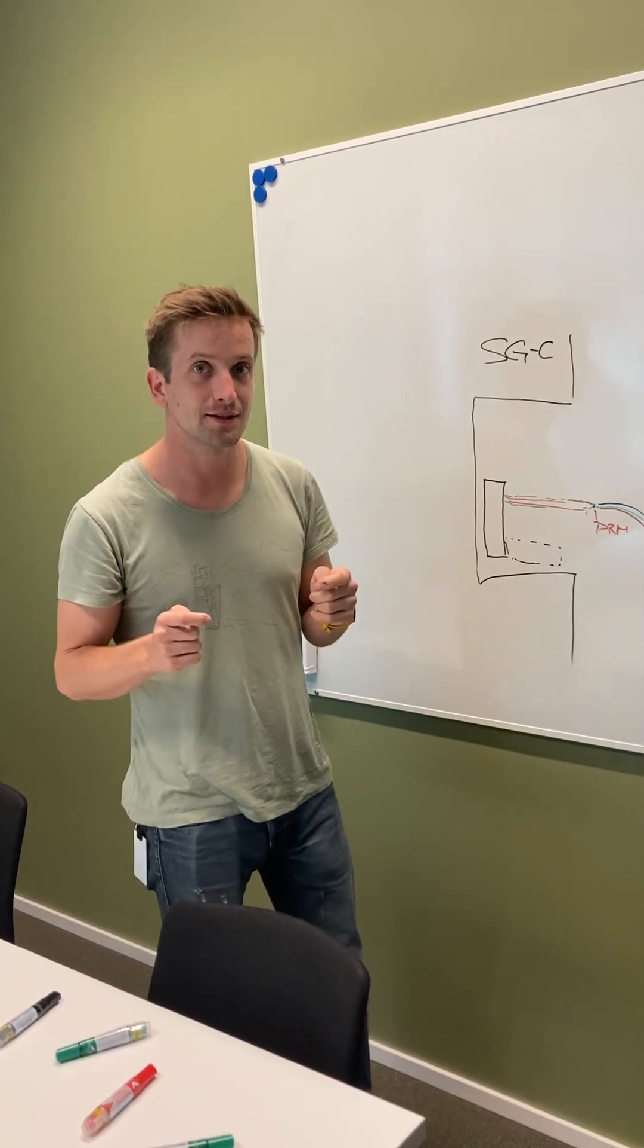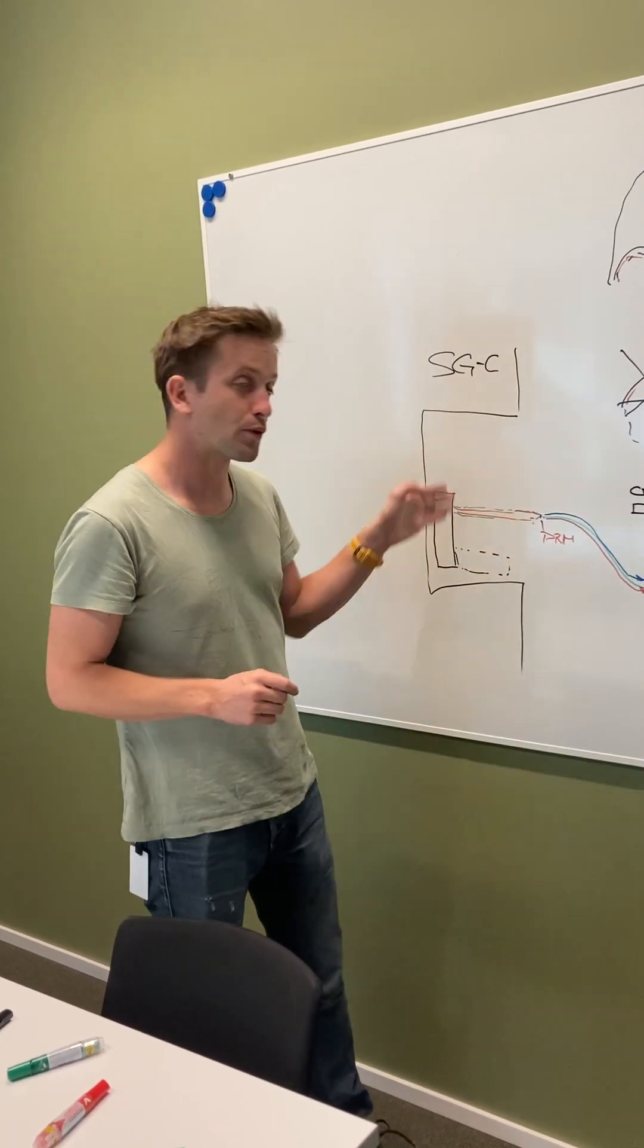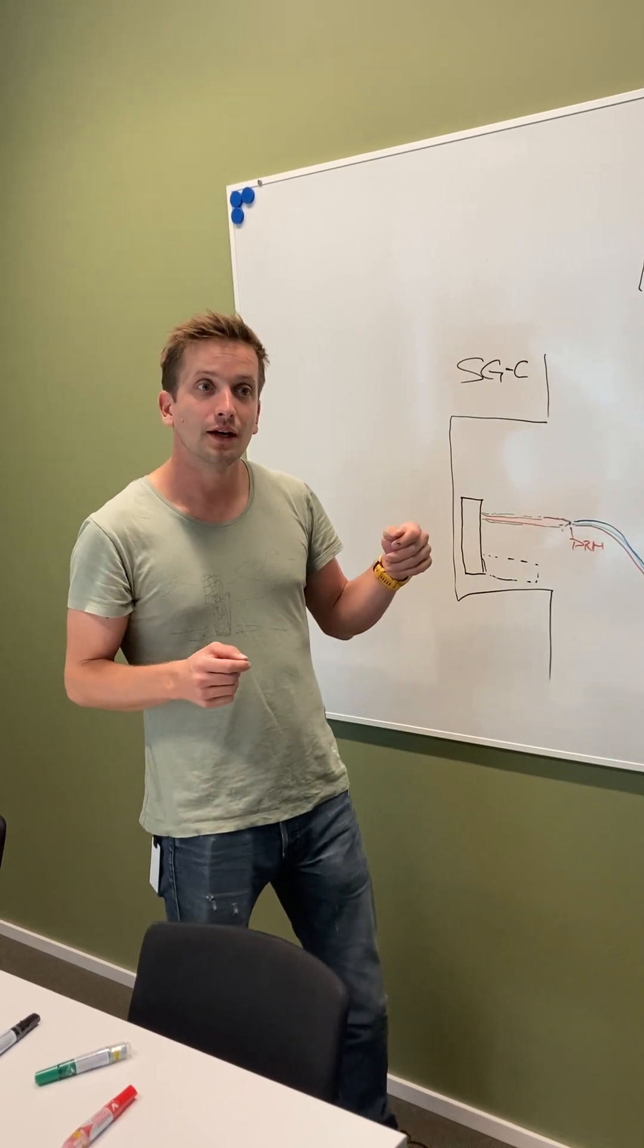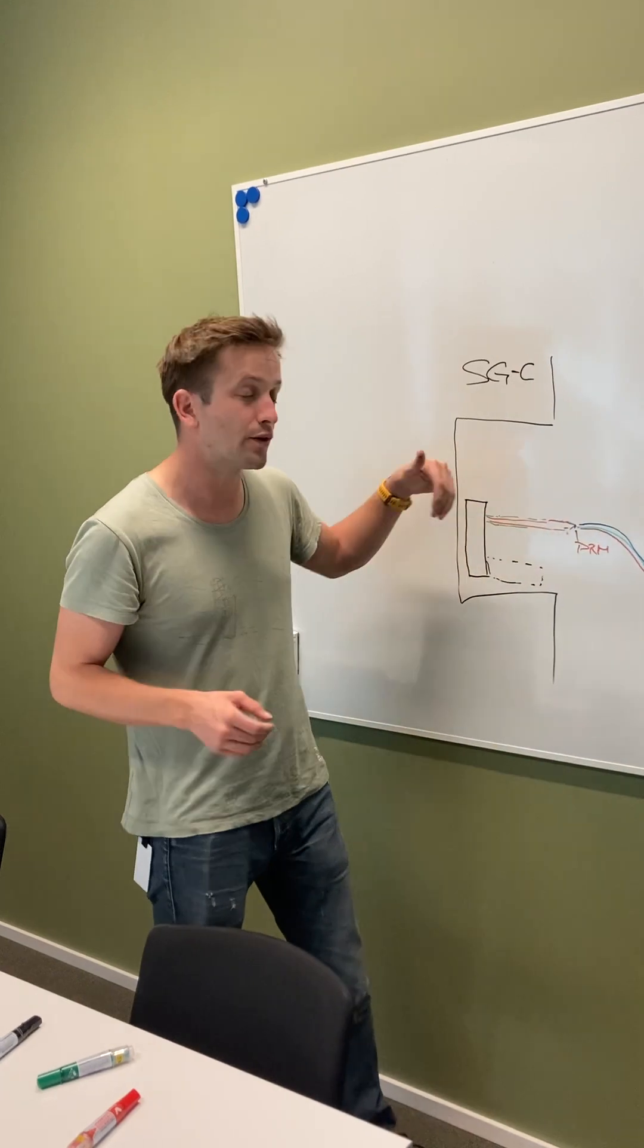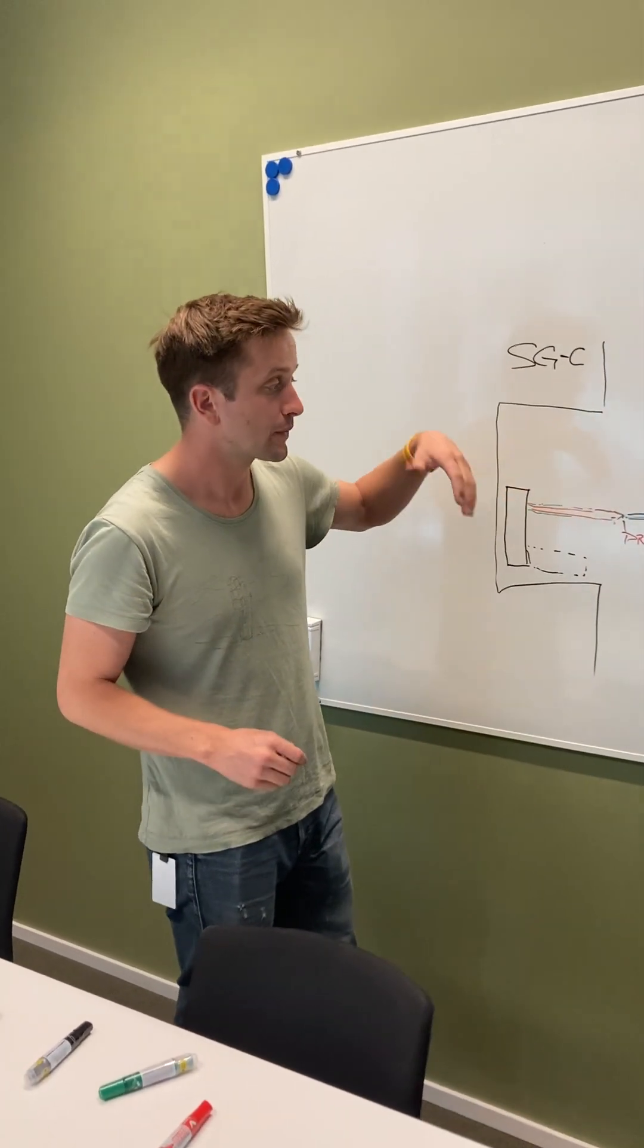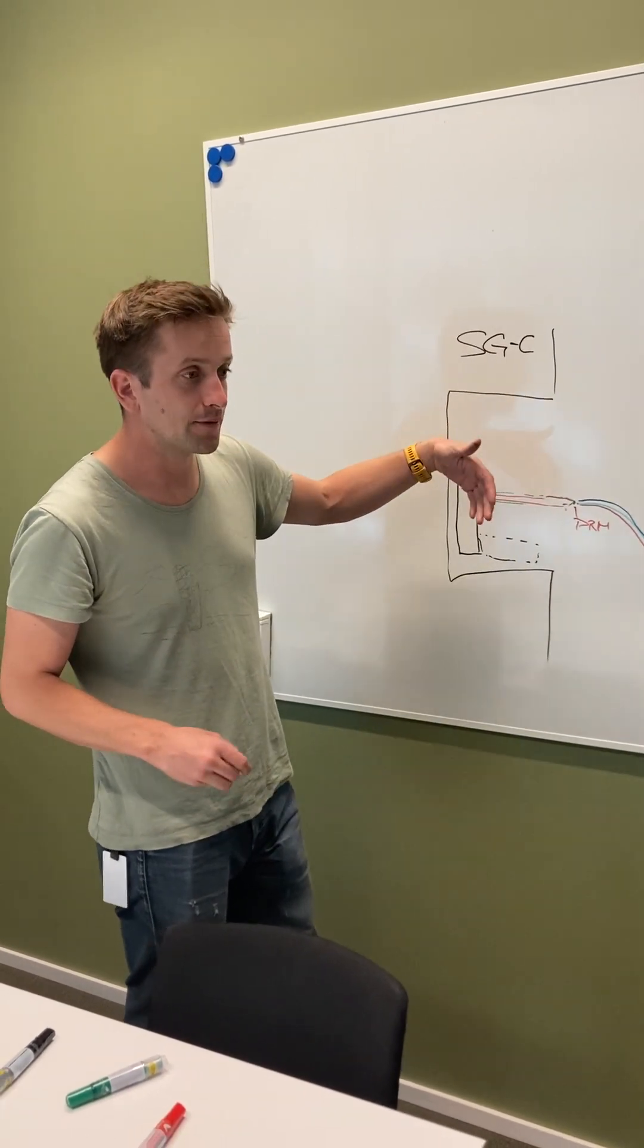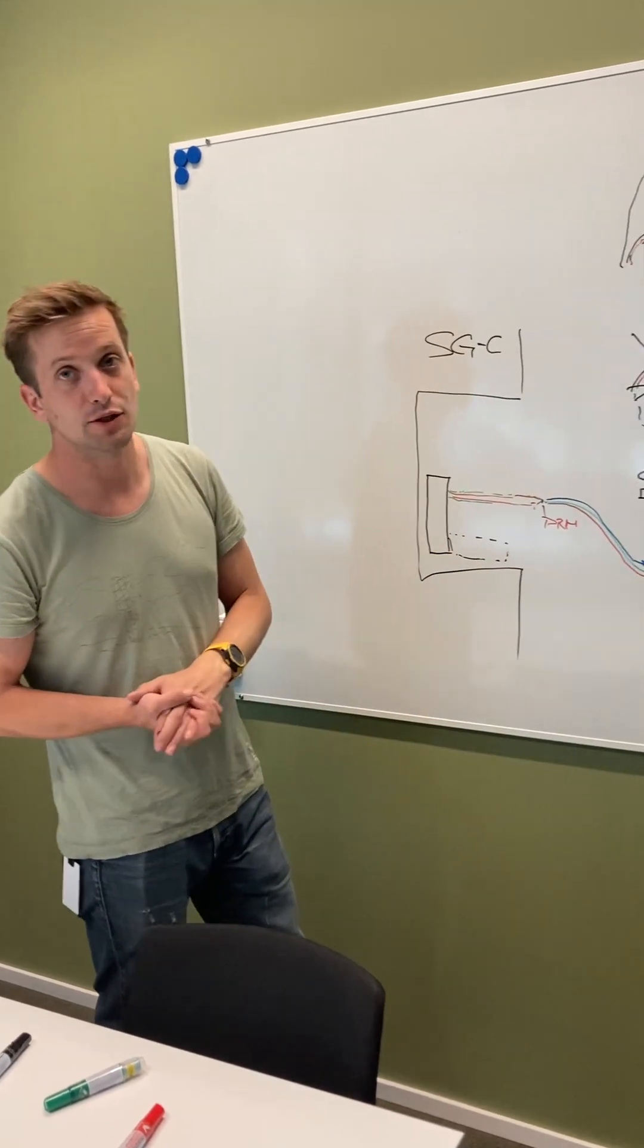The problem with it is that every time you lose contact, every time you break this line of sight, you also don't know anymore how many steps or where you're absolutely standing. So, in general, this is a relative distance measurement system, not an absolute distance measurement system.